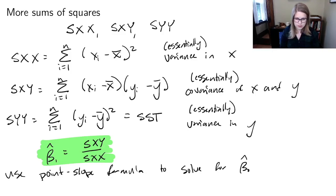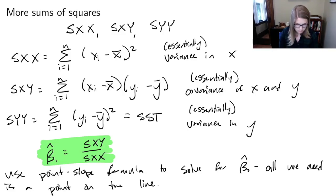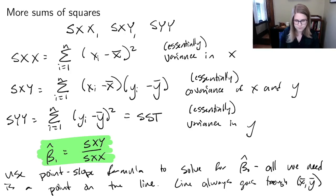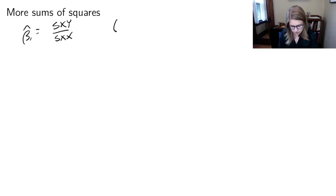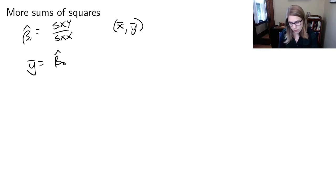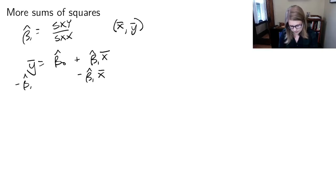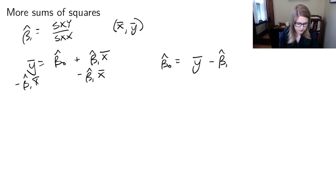Once you have beta_1, you can use the point-slope formula to solve for beta_0_hat. All we would need is a point on the line. The least squares regression line always goes through the point (X_bar, Y_bar). So if we know beta_1_hat is S_XY over S_XX, and that the line always goes through (X_bar, Y_bar), then we can plug in: Y_bar equals beta_0_hat plus beta_1_hat times X_bar, and then subtract beta_1_hat times X_bar from both sides. So beta_0_hat equals Y_bar minus beta_1_hat times X_bar.